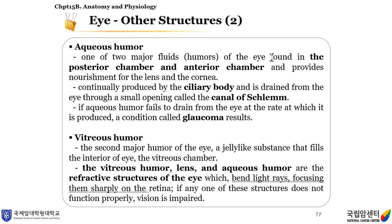The vitreous humor is the second major humor of the eye — a jelly-like substance that fills the interior of the eye, the vitreous chamber. The vitreous humor, lens, and aqueous humor are the refractive structures of the eye, which bend light rays, focusing them sharply on the retina. If any one of these structures does not function properly, vision is impaired.